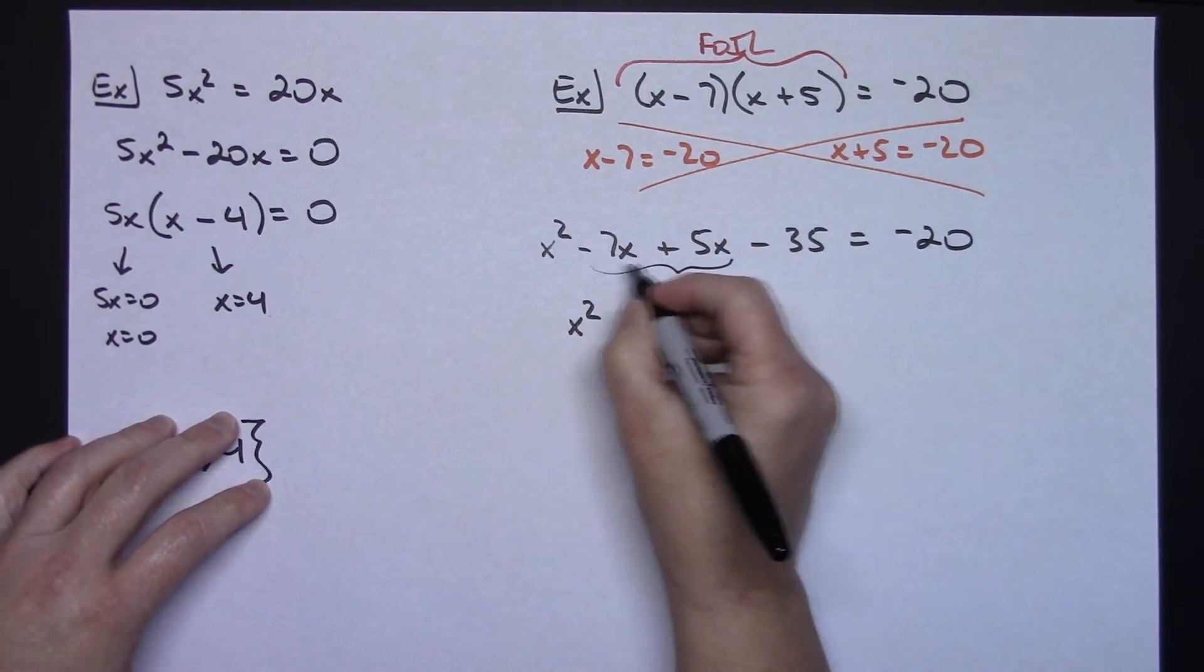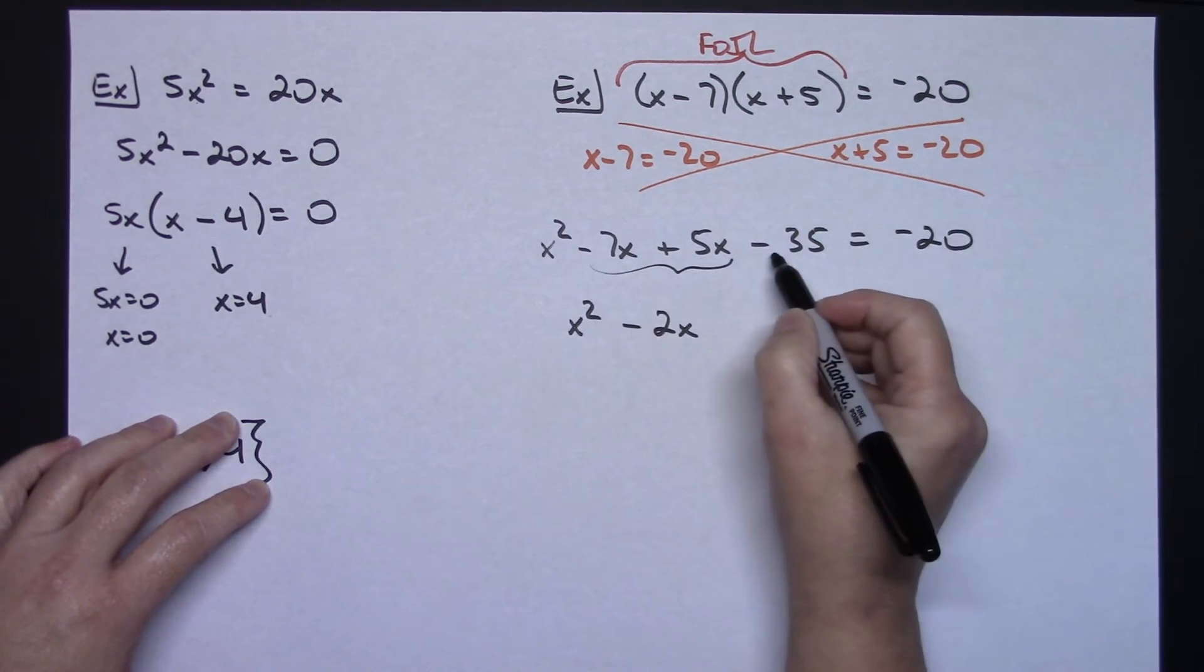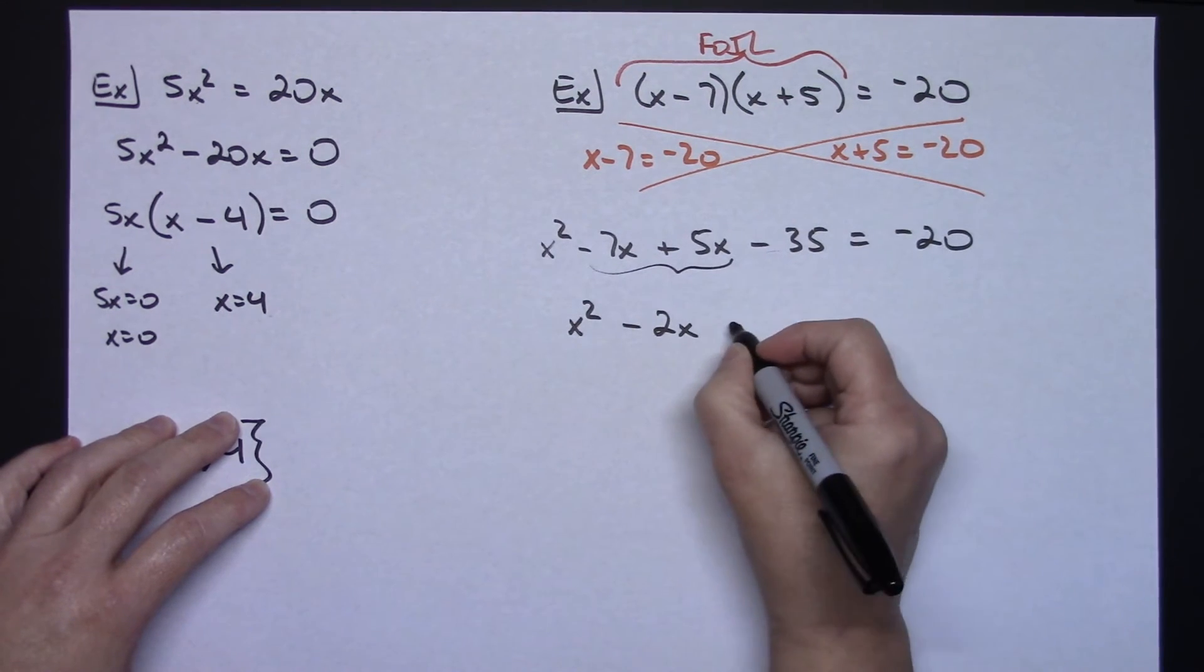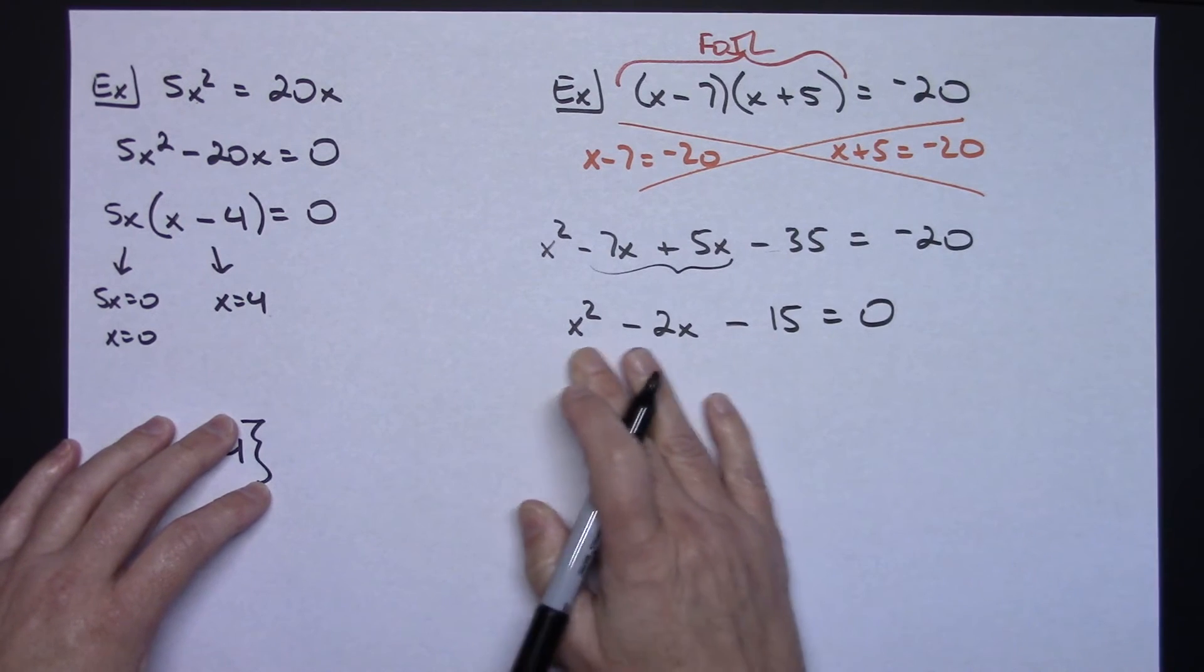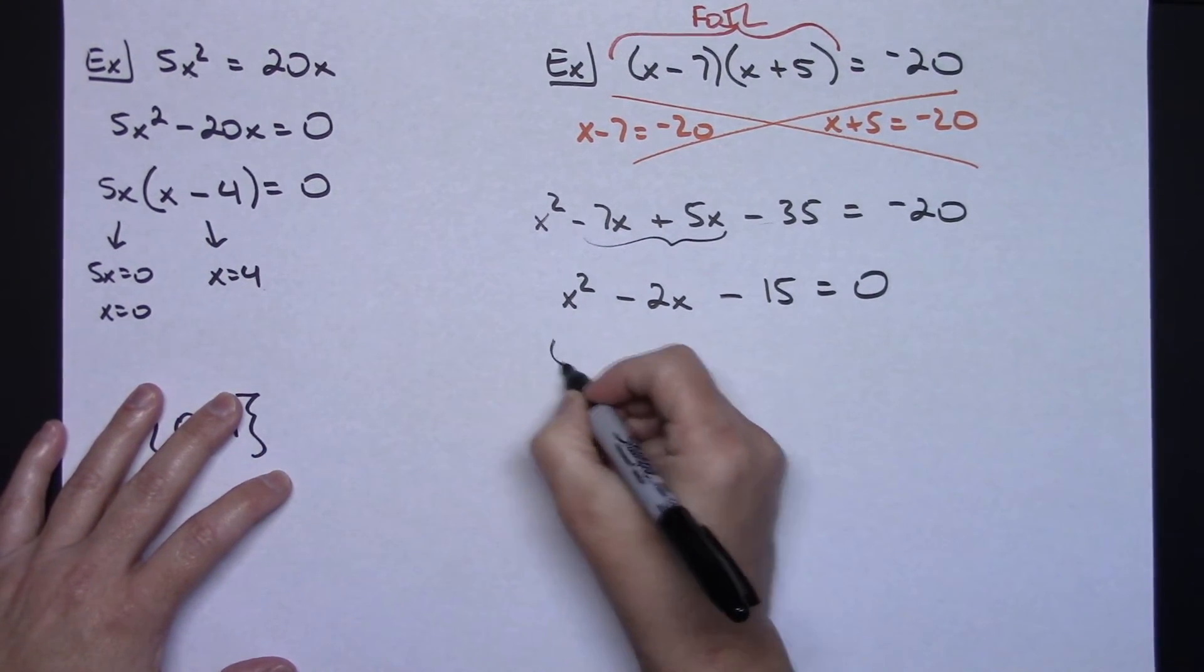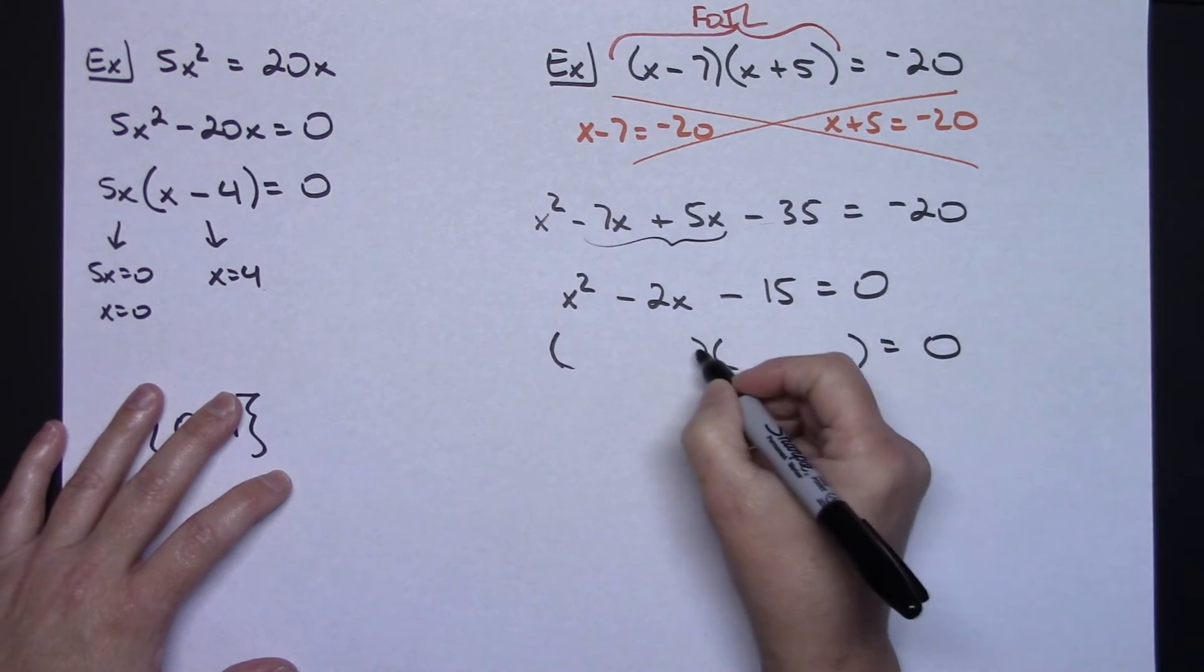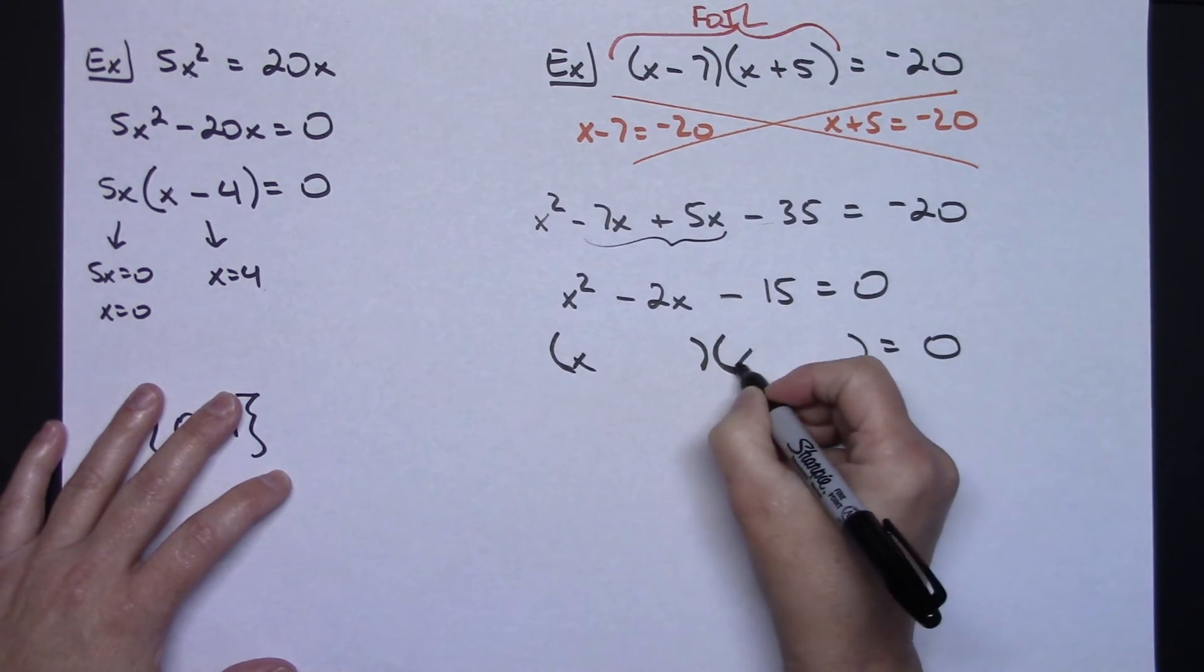So, I'm going to have an x squared. Putting those two terms together, I'll have a minus 2x and then negative 35 plus 20. Moving that over is going to give me a minus 15 equals 0. Now, I'm back to a nice little trinomial here that hopefully is going to factor. Of course, if it didn't factor, then we wouldn't be using the 0 product rule. We'd have to be using quadratic formula or something along those lines.